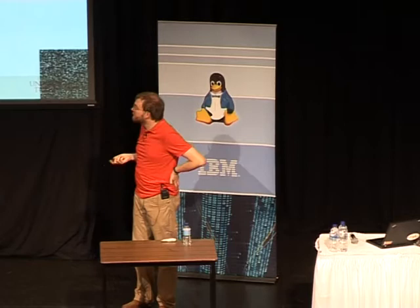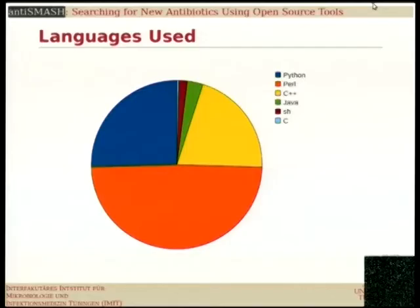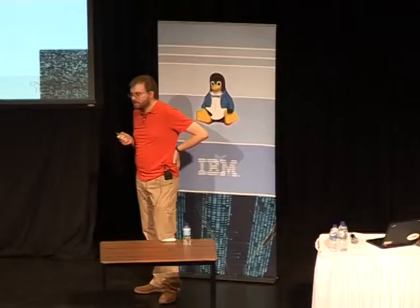Going at our software — this is something that's typical for an academic project. Our main pipeline is written in Python. For historical reasons we have some Perl code, and I was actually surprised when I put up the statistics that our historical Perl code is actually half our code.